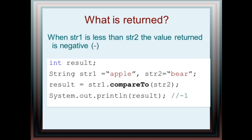So let's see what's returned. When string1 is less than string2, the value returned is negative. Less than here means occurs first in alphabetical order. For example, we have String apple as string1 and String bear as string2. String1.compareTo(string2) gives us a negative value. So result here in this instance would be negative 1.